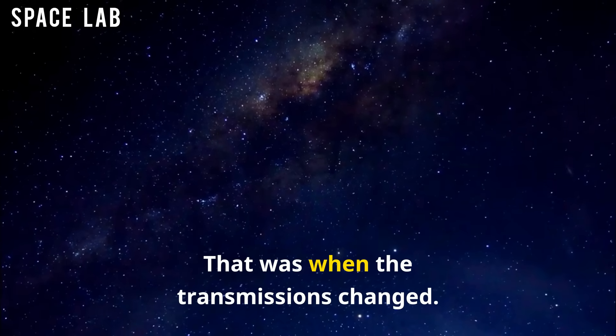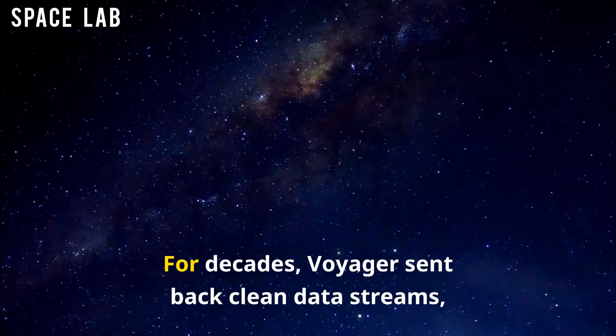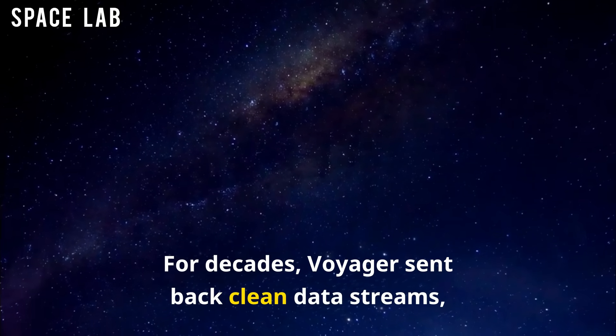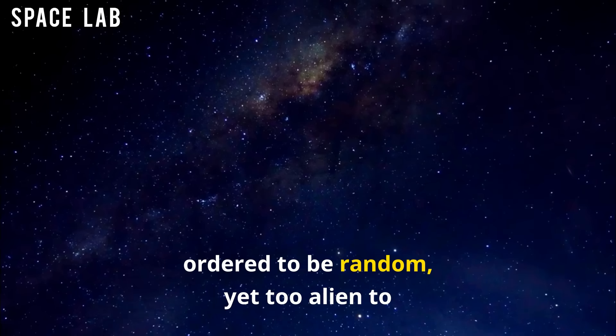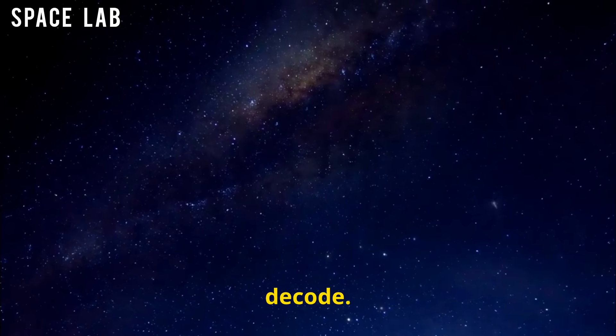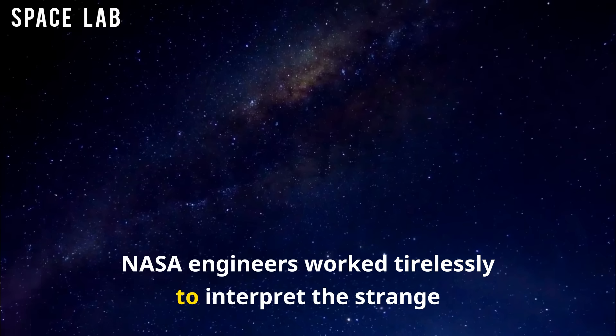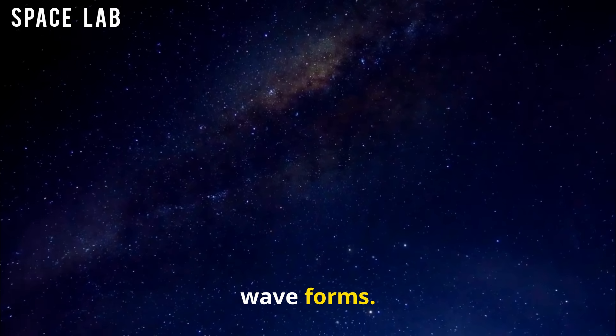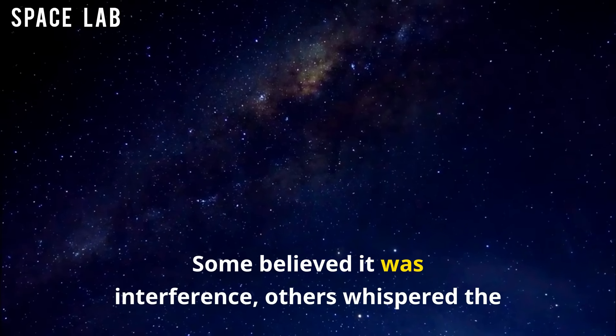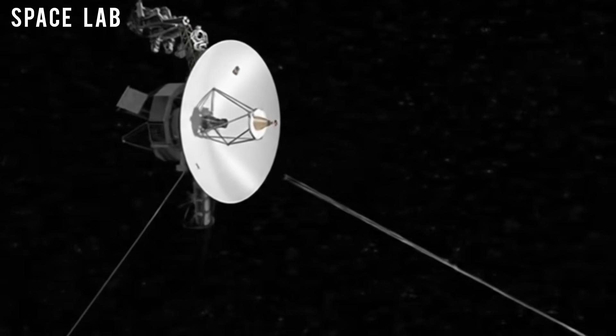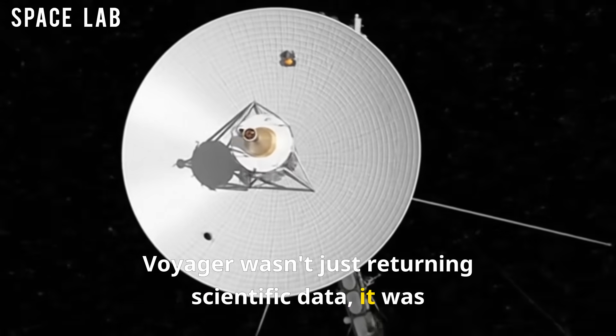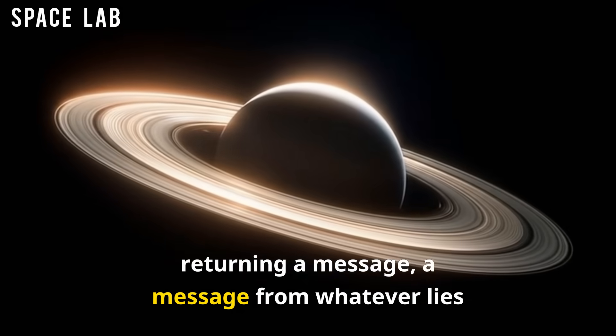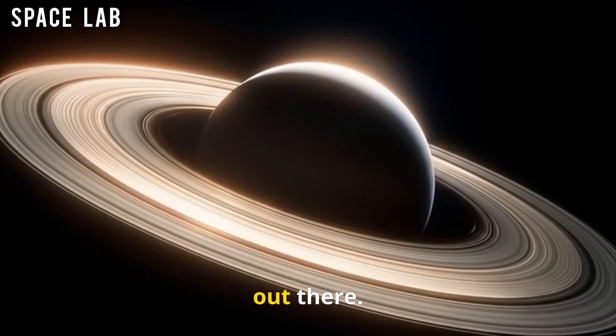That was when the transmissions changed. For decades, Voyager sent back clean data streams. But now, its signal carried distortions. Patterns too ordered to be random, yet too alien to decode. NASA engineers worked tirelessly to interpret the strange waveforms. Some believed it was interference. Others whispered the unthinkable: Voyager wasn't just returning scientific data. It was returning a message. A message from whatever lies out there.